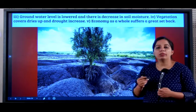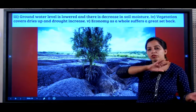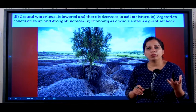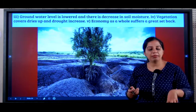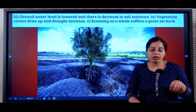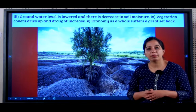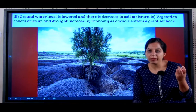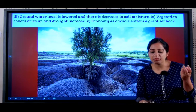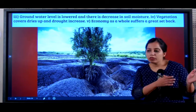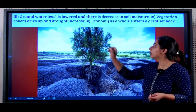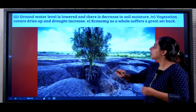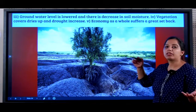Groundwater level is lowered. When soil erosion happens, a lot of soil is carried away by wind, water, and other agents. We keep digging wells to increase soil fertility and irrigation. When there is no soil, nothing is there to hold water and percolate, and roots are not there to push water into the groundwater. So erosion leads to depletion of groundwater resources. Vegetation cover dries up because there is no fertile soil, drought increases, and the whole economy suffers.